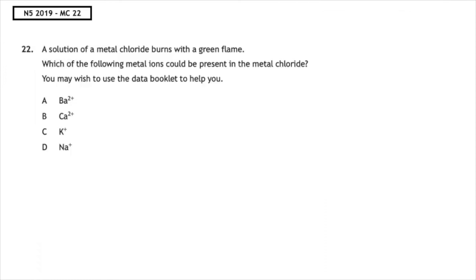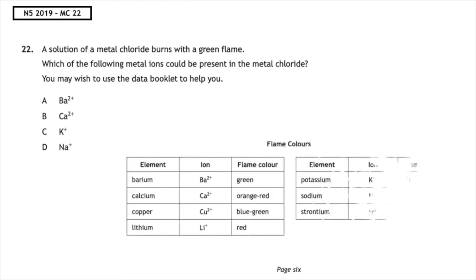This past paper question is from National 5 2019 Multiple Choice 22. A solution of a metal chloride burns with a green flame. Which of the following metal ions could be present in the metal chloride? You may wish to use your data booklet to help you. This is looking at flame colors. We want to use page 6 of our chemistry data booklet. If we look this up, the one that has a green flame color is barium 2+ ion, so the correct answer is multiple choice answer A.